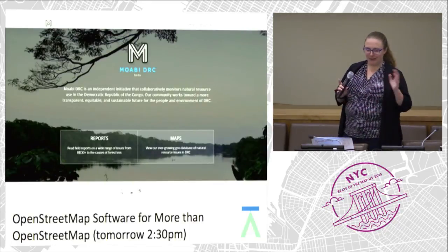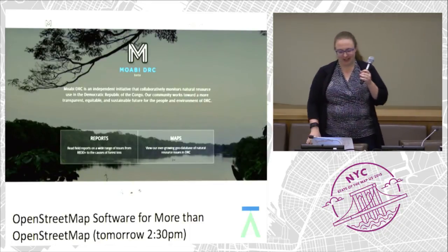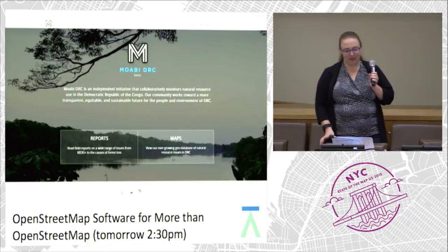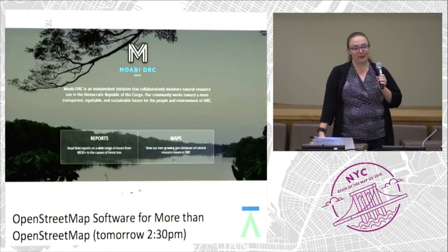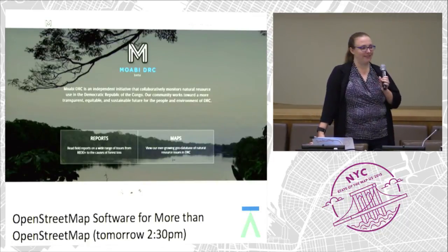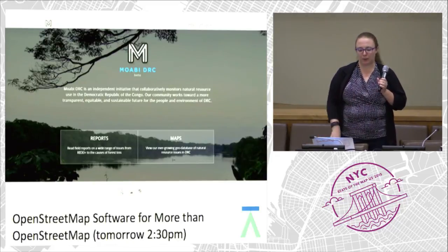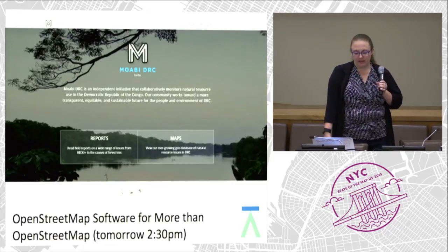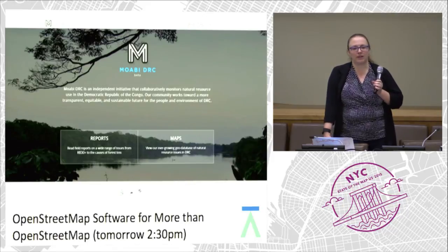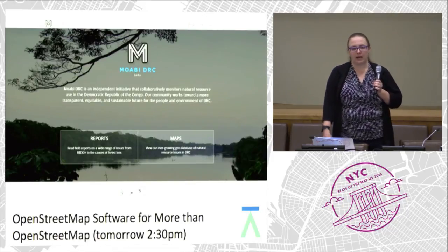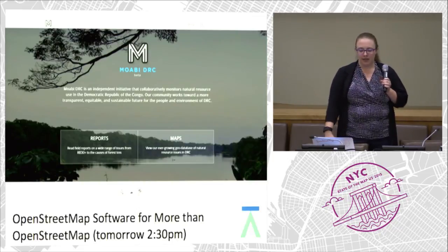I did want to do a little pitch for Sajed's talk tomorrow, 'OpenStreetMap software for more than OpenStreetMap,' if you're looking for an OpenStreetMap-as-a-platform talk. He's going to be talking about multiple use cases, but Moabi is a specific one related to land — an initiative in the Democratic Republic of Congo to map resource information using the OpenStreetMap stack on a separate set of servers.